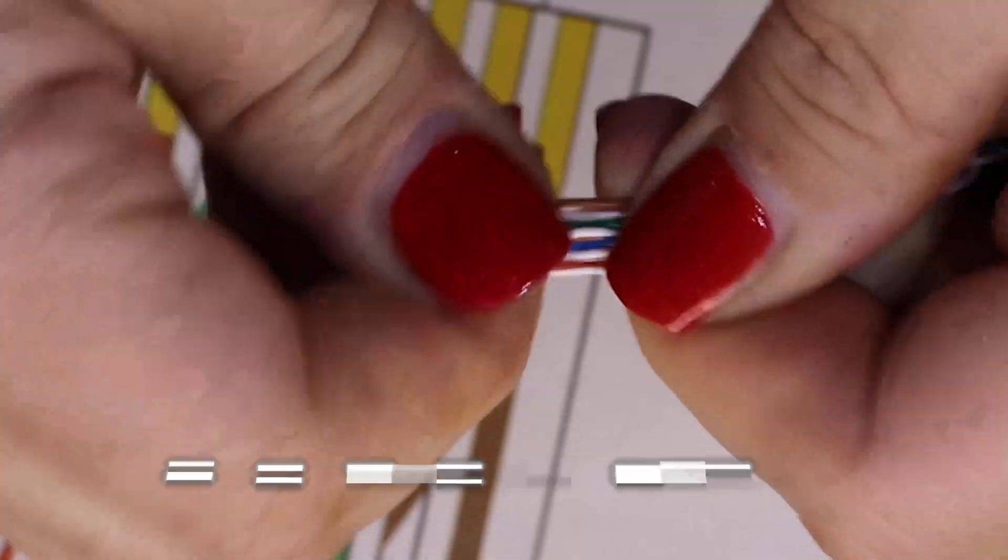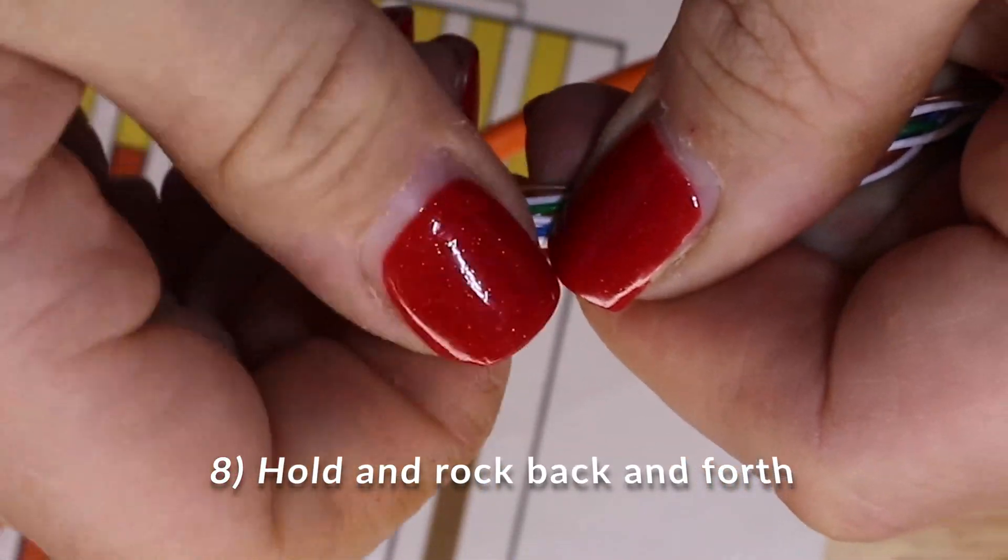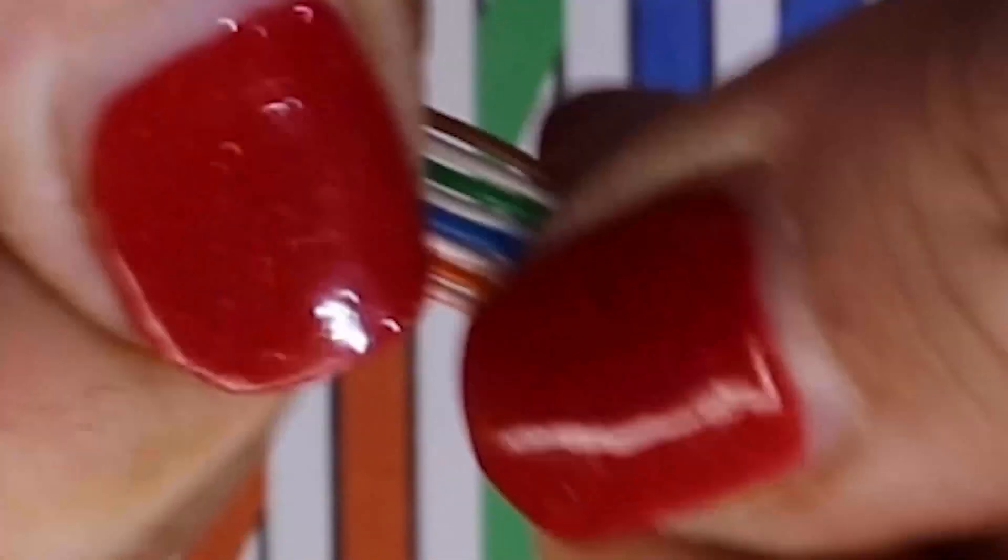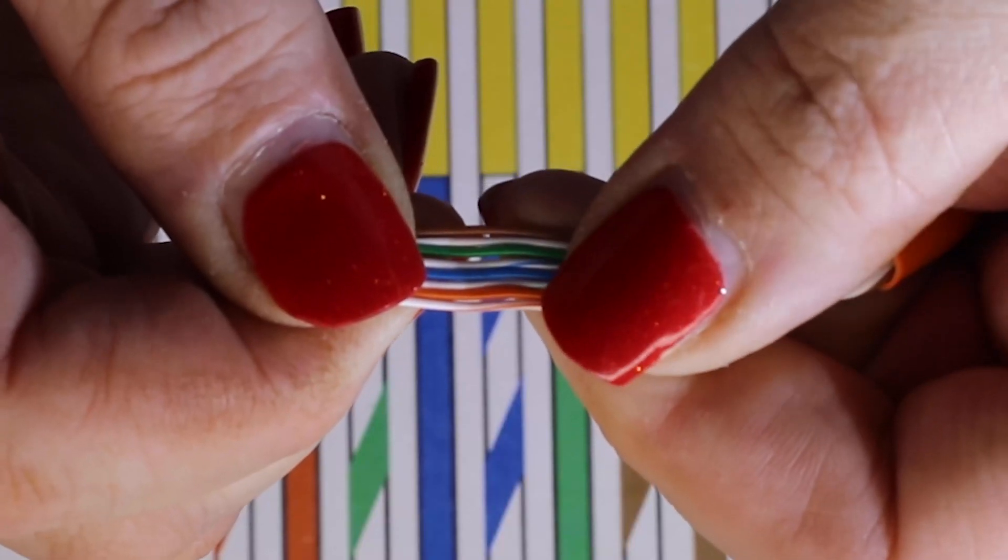Once you get them lined up, you want to take both fingers and sort of move the wires together to try and get them even straighter and flatter so that you can fit this head on.